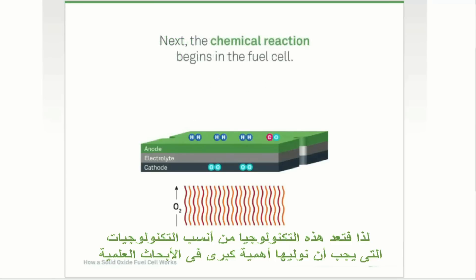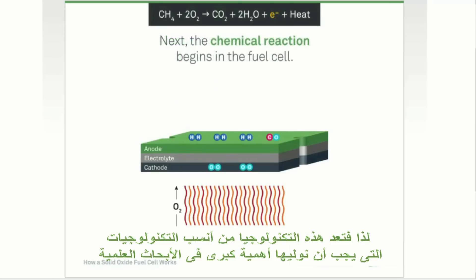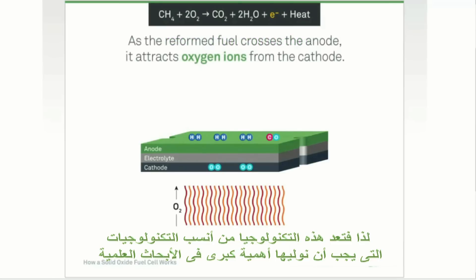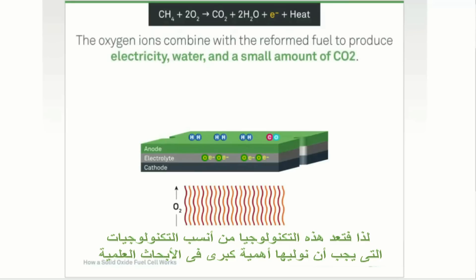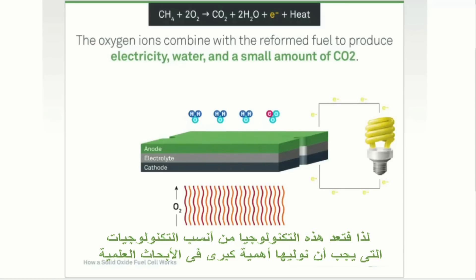The chemical reaction begins in the fuel cell. As the reformed fuel crosses the anode, it attracts oxygen ions from the cathode. The oxygen ions combine with the reformed fuel to produce electricity, water, and small amounts of carbon dioxide.